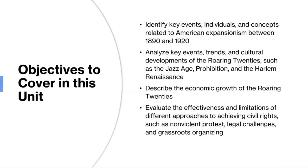The quest for civil rights in America involved a variety of approaches and strategies. There was the nonviolent protest method, where civil rights leaders such as Martin Luther King Jr. advocated for nonviolent resistance, organizing protests, marches, and boycotts to challenge segregation and discrimination. There were legal challenges, where civil rights activists pursued legal avenues to challenge discriminatory laws and practices, leading to landmark Supreme Court decisions such as Brown v. Board of Education and the Civil Rights Act of 1964. And finally, there was grassroots organizing, where grassroots movements mobilized local communities to demand change and confront racial injustice.